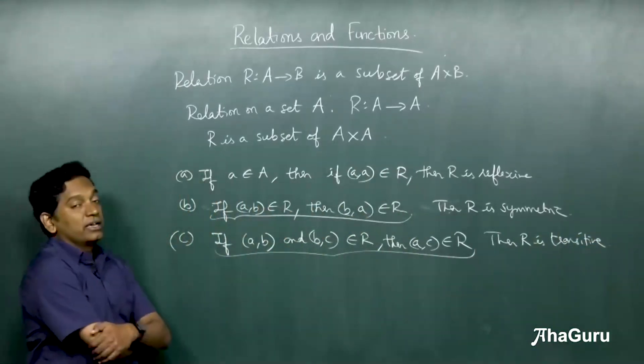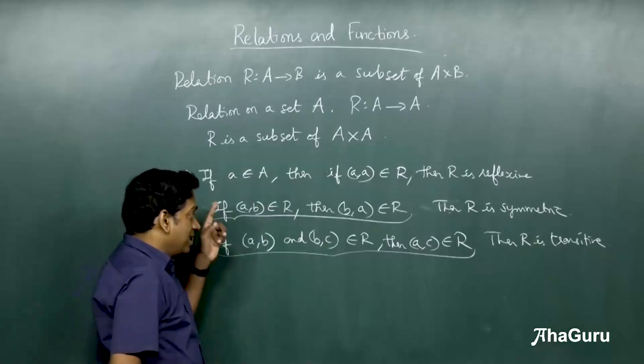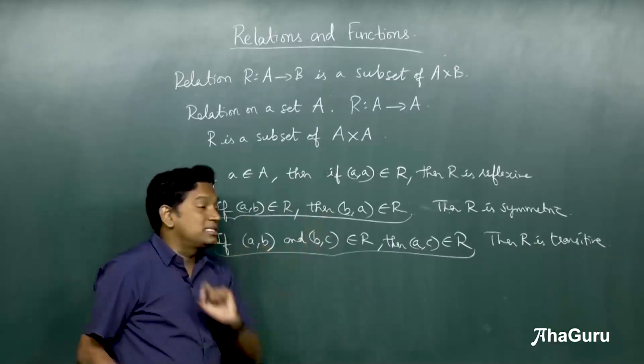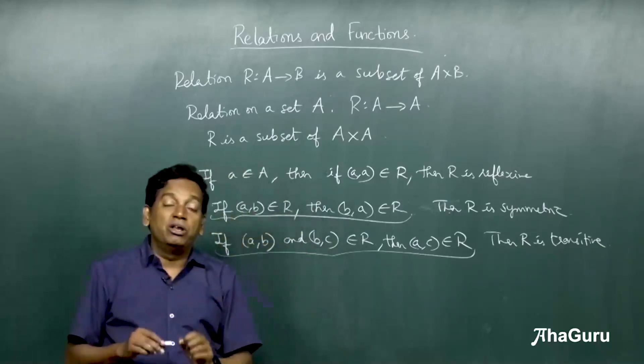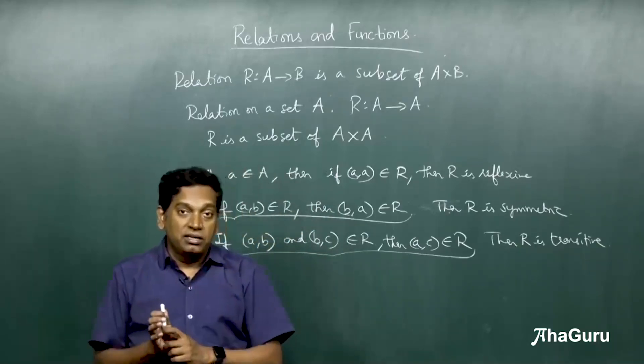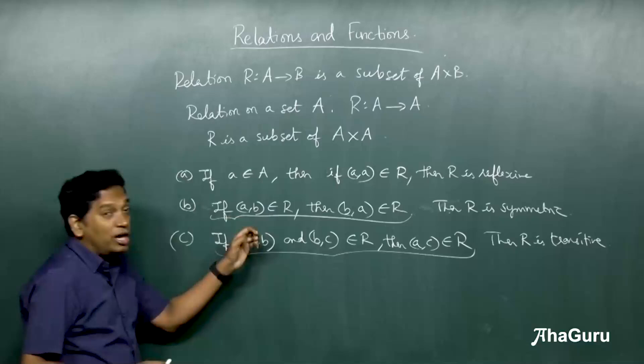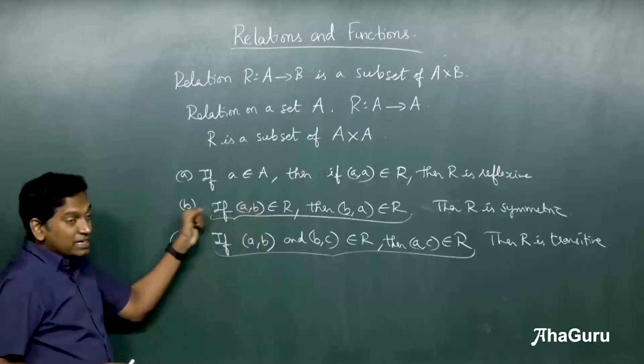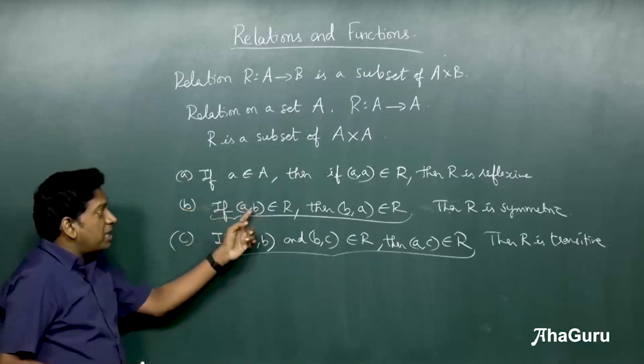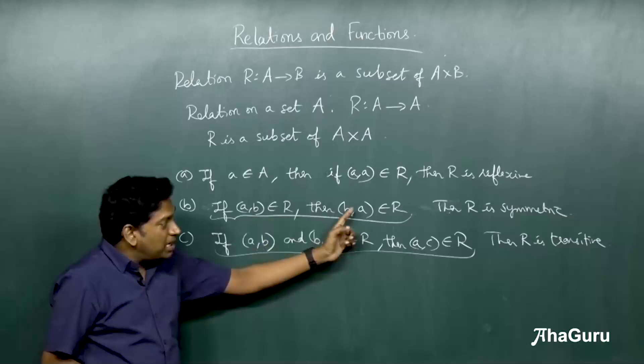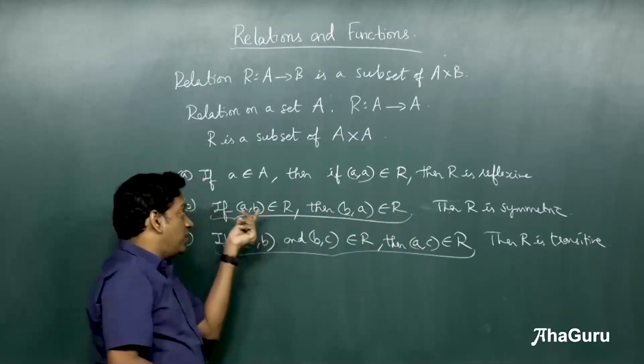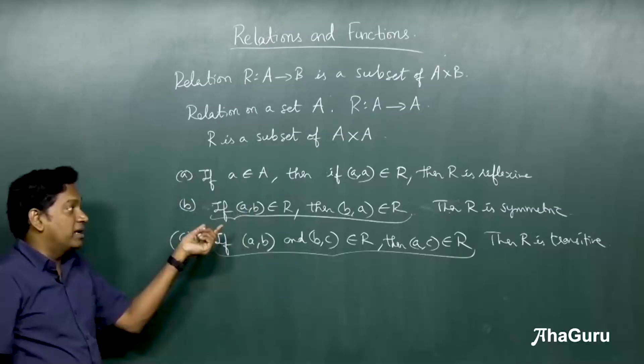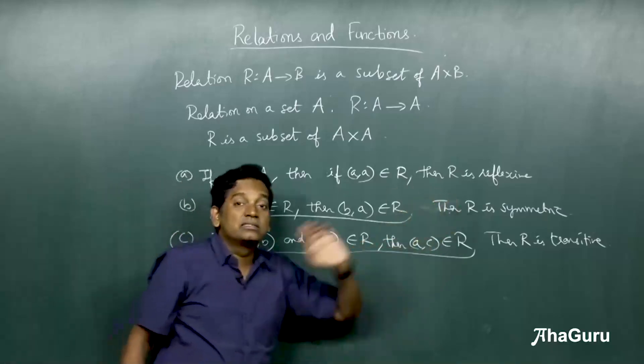One very important thing to understand here is that the condition doesn't say A comma B and B comma A both must belong to the relation. The condition is that if A comma B belongs to R, then B comma A should belong to R. If the condition is satisfied for every A comma B pair, then R is symmetric.